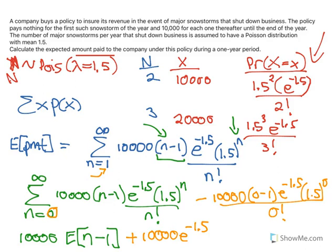Now, as for E N minus 1, this is equal to 10,000. If it was E of N, that would just be the expected value of N, which is 1.5, so we have to minus 1 off of that. So it's 1.5 minus 1, and then plus the 10,000, E to the negative 1.5. Put that together, and you get a final answer of 7, 2, 3, 1. So that's the expected payment in a given year from the insurance company.